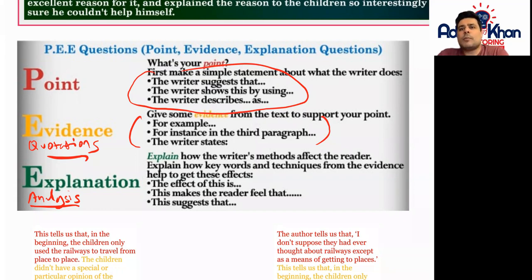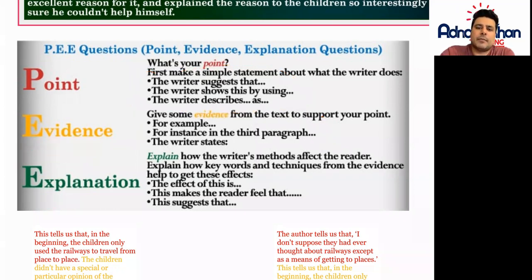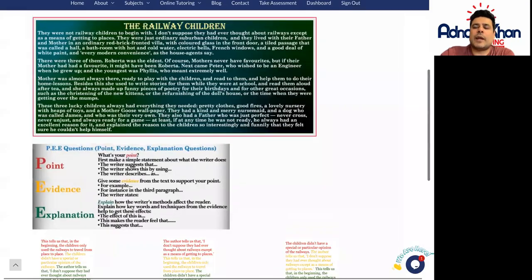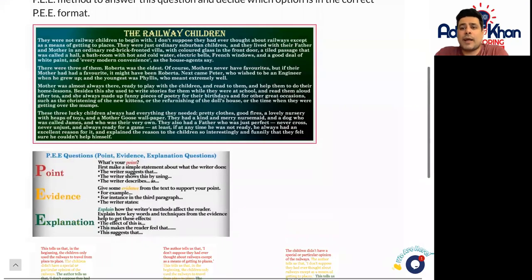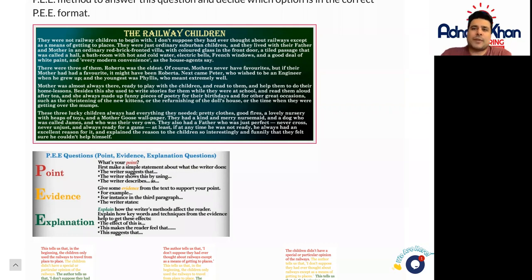So this is all about Point Evidence Explanation, or Point Quotation Analysis — a basic structure for you to understand how to lay out a paragraph. In this exercise you have a small extract from The Railway Children to read, and then you practise your PEE technique. In our next follow-up class we'll go into much more detail and look at some of your responses. Good luck with this.